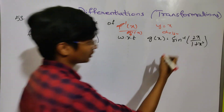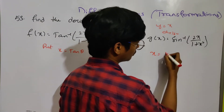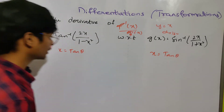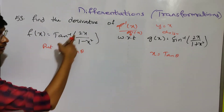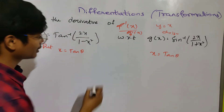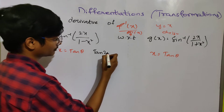Because x equals to tan θ, we use the substitution x = tan θ. For the formula here, tan x equals to 1.